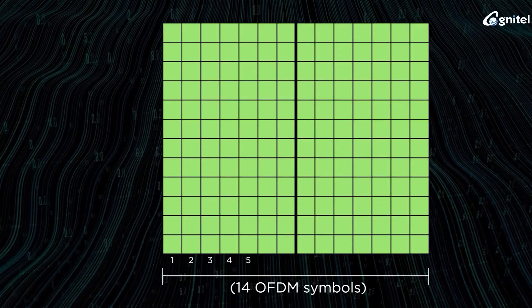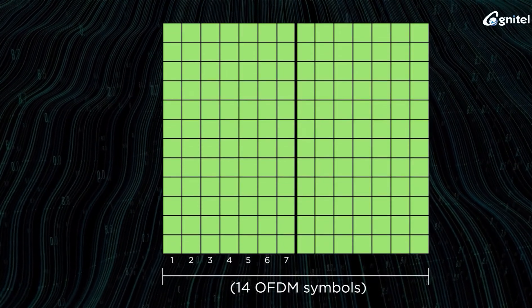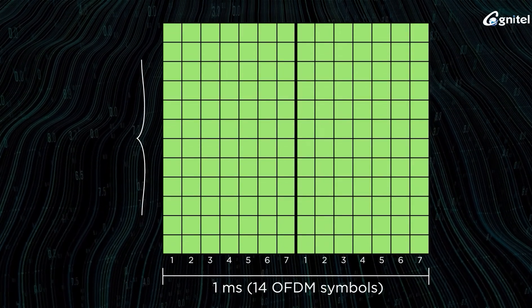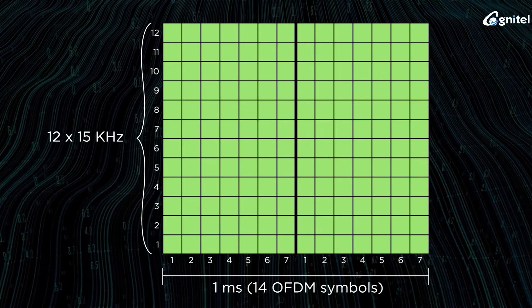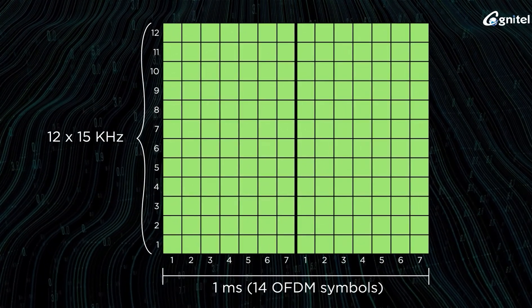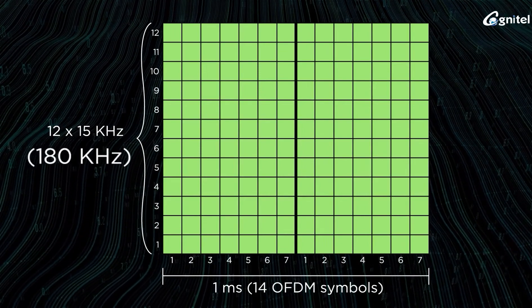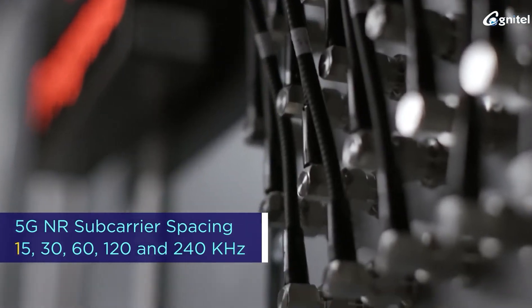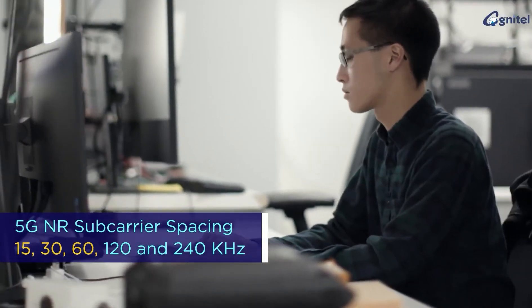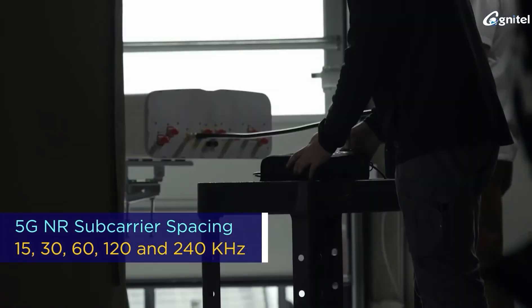14 such OFDM symbols were placed in one millisecond distributed over 12 subcarriers of 15 kilohertz spacing to form a rectangle of resources of 180 kilohertz. In 5G NR, subcarrier spacing of 15, 30, 60, 120, and 240 kilohertz are supported.